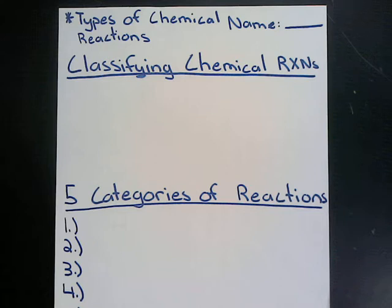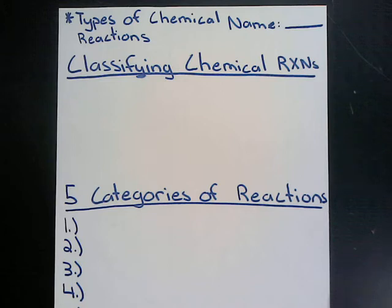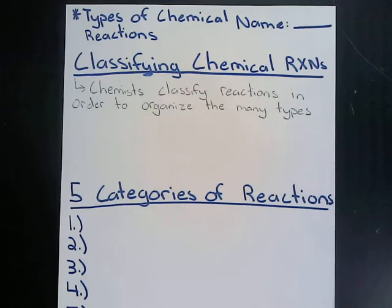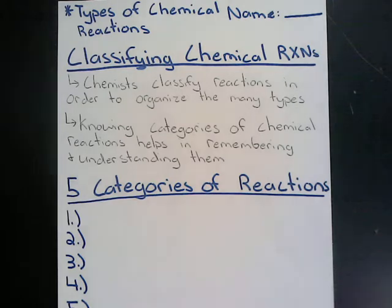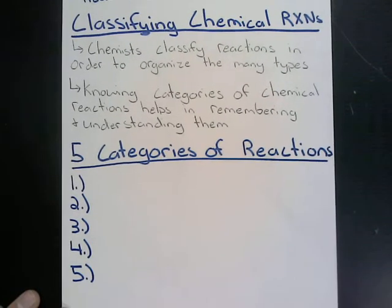We've gone over and balanced a lot of equations so far, and there are many different types of reactions out there. It's really important to classify these reactions into their separate categories. Chemists classify reactions in order to organize the many different types, and in this class we classify chemical reactions into five different categories.